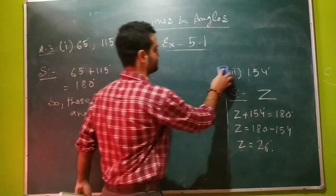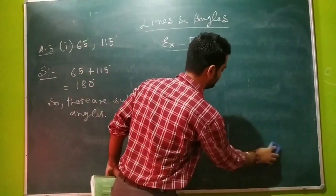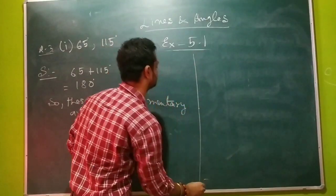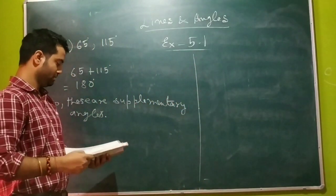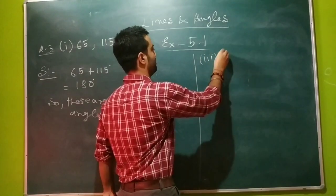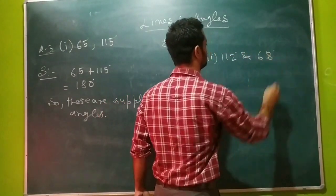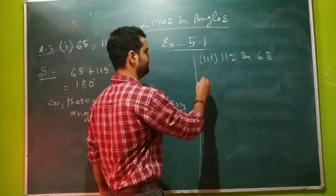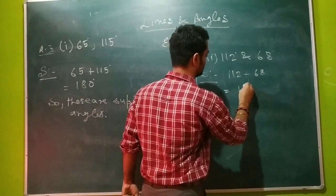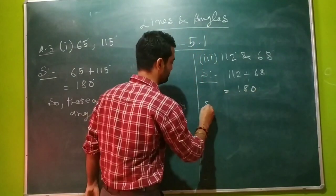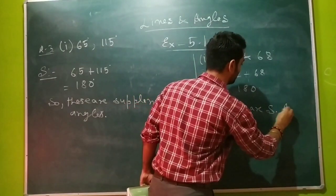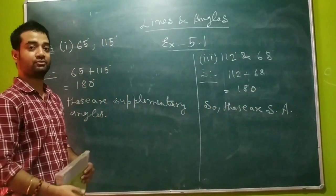Let us solve another question of the same type. Question number 3: the two measurements are 119 degrees and 68 degrees. In the same way we will add them. On adding, we get 180 degrees. So these are also supplementary angles — SA is short form for supplementary angles.